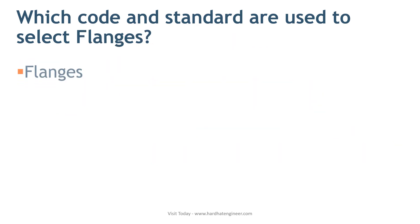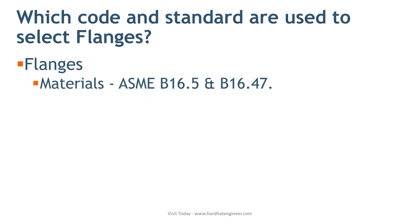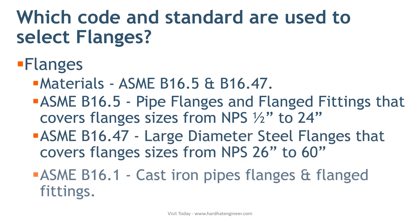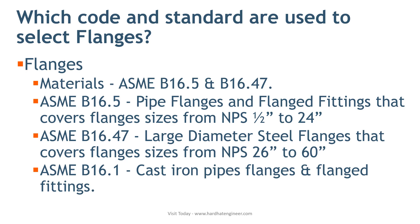Next is flanges. The list of materials used to manufacture flanges is covered in ASME B16.5 and B16.47. ASME B16.5 is the standard for pipe flanges and flanged fittings covering sizes from NPS 1.5 inch to 24 inch, whereas ASME B16.47 is the standard for large diameter steel flanges covering sizes from NPS 26 inch to 60 inch. ASME B16.1 is the standard for cast iron pipe flanges and flanged fittings.